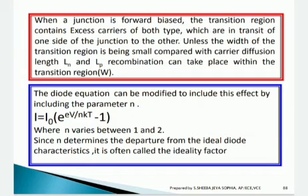Considering recombination and generation in the transition region: in a pn junction we have assumed that recombination and thermal generation of carriers occurs primarily in the neutral pn junction regions, outside the transition region. In this model, forward current in the diode is due to injection of carriers into the neutral region, and the reverse saturation current is due to the thermal generation of electron-hole pairs in the neutral region.